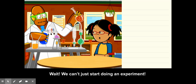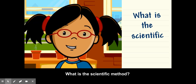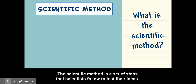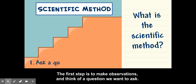We can't just start doing an experiment. What is the scientific method? The scientific method is a set of steps that scientists follow to test their ideas.